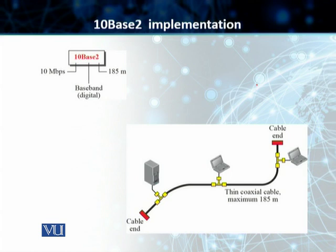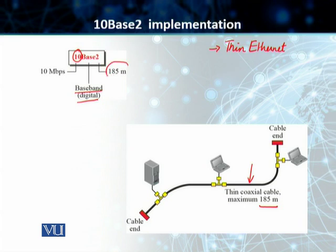The next implementation is 10Base2, also called ThinEthernet or ThinNet. We are using thin coaxial cable, and the maximum length of this cable is 185 meters. '10' represents 10 megabits per second, 'Base' is baseband, and '2' means about 200 meters — though in actuality the maximum length is 185 meters. Thin coaxial cable can be bent very easily close to the stations, and the transceiver in this case is normally not external — it is normally part of the network interface card and is installed inside the station.